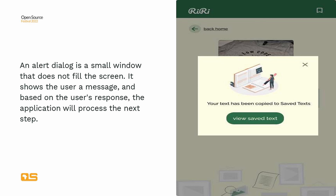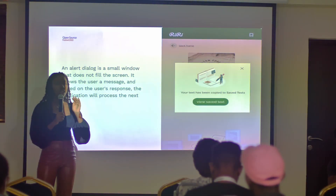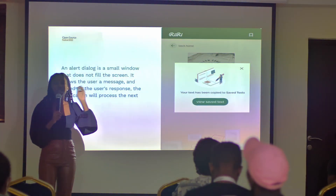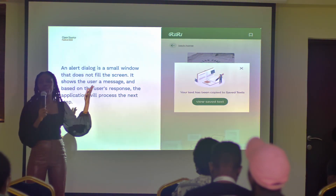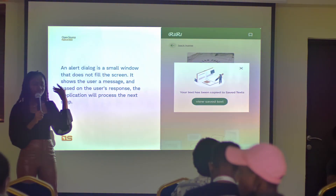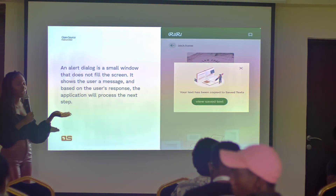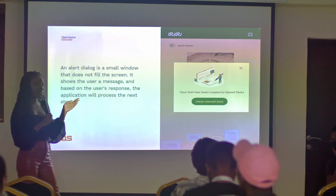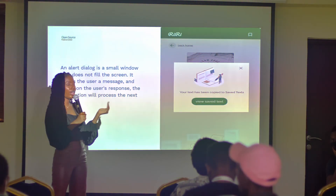At the basic form, an Android dialog is like a small window on your Android device. It doesn't take up the full screen, and it shows a message to the user. It could be maybe a message, and it's supposed to share something. But based on what the user says, the application determines the next step. That's the basic form of an Android dialog.